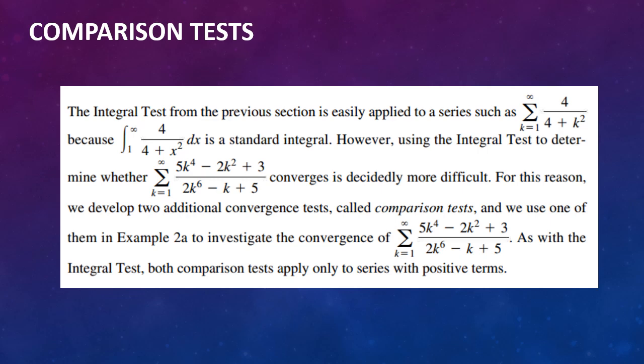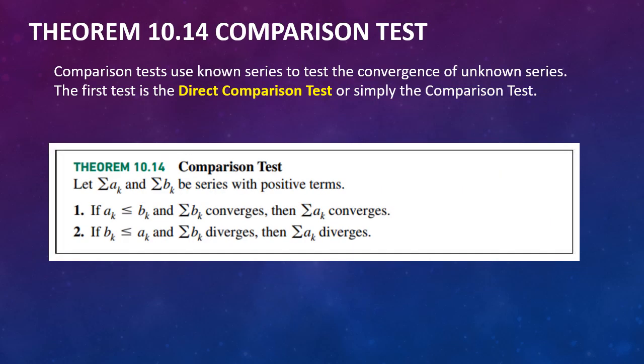As with the integral tests, both comparison tests apply only to series with positive terms. The first test we are going to look at is the direct comparison test, or simply the comparison test, and it uses known series to test the convergence of unknown series. Theorem 10.14 says: let series a sub k and series b sub k be series with positive terms. If a sub k is less than or equal to b sub k and the series b sub k converges, then a sub k has to converge as well. If b sub k is less than a sub k and b sub k diverges, then the series a sub k diverges as well.